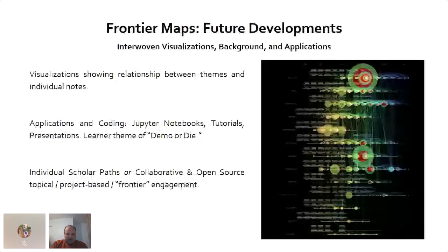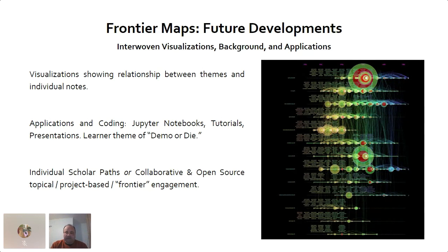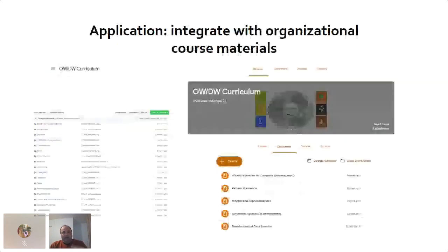Nodes can lead to other nodes, so you can sub-reference different topics and go down a rabbit hole in a controlled way. In the future, Jesse would like to build visualizations of themes and individual nodes, incorporate more Jupyter notebooks, tutorials, and presentations, and allow people to choose paths — whether to be an individual scholar or heavily into the collaborative space — reflecting different learner modes and styles.